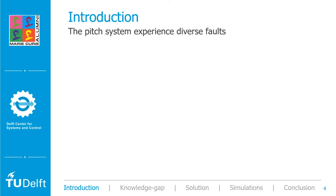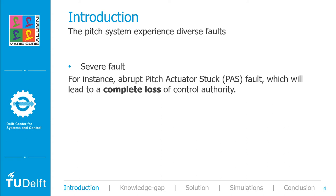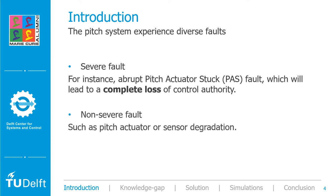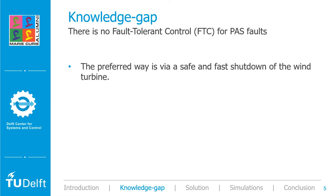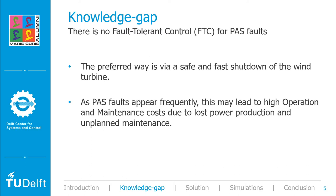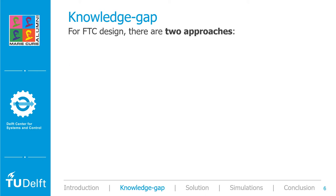All the faults can be divided into severe faults and non-severe faults. For severe faults, it implies a complete loss of control authority, such as abrupt pitch actuator stuck. For non-severe faults, it includes pitch actuator or sensor degradation. However, currently there is no fault-tolerant control for such a severe pitch actuator stuck fault. The preferred way to deal with the fault is through a safe and fast shutdown of the wind turbine. As pitch actuator stuck faults appear frequently, this may lead to high operation and maintenance costs due to lost power production and unplanned maintenance. Therefore, it is important to design a fault-tolerant control for pitch actuator stuck fault.